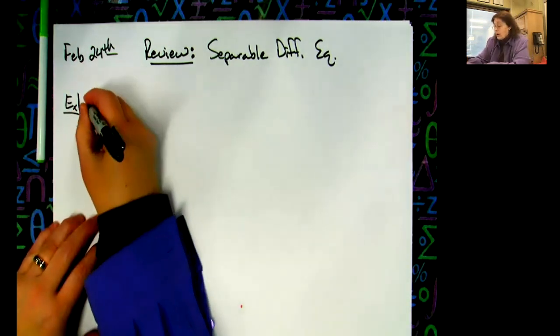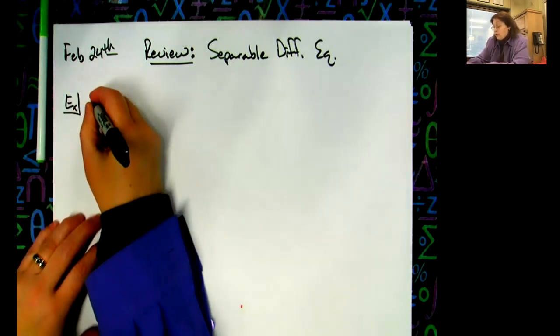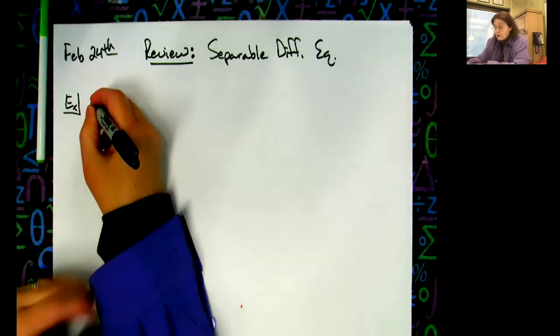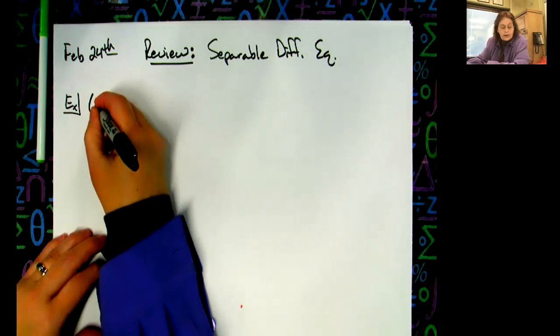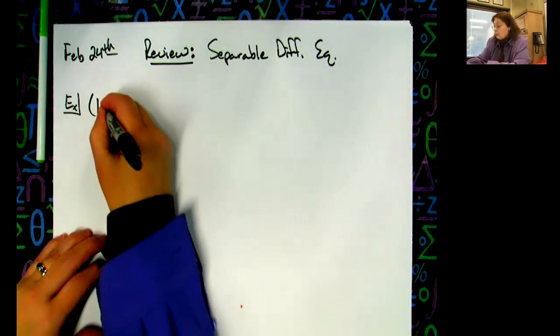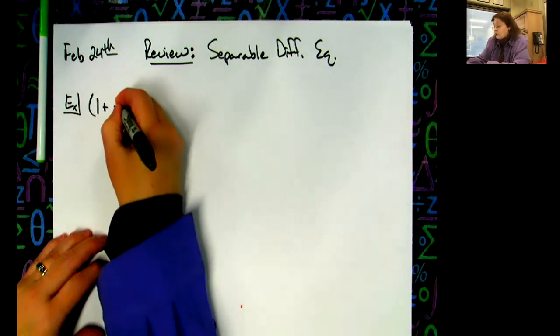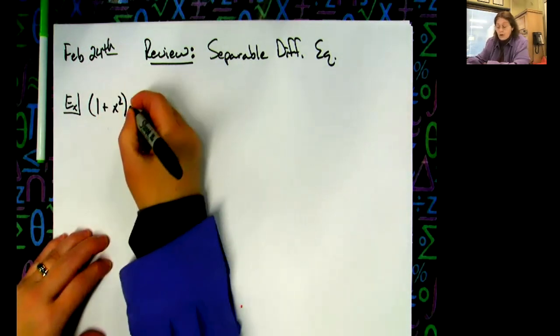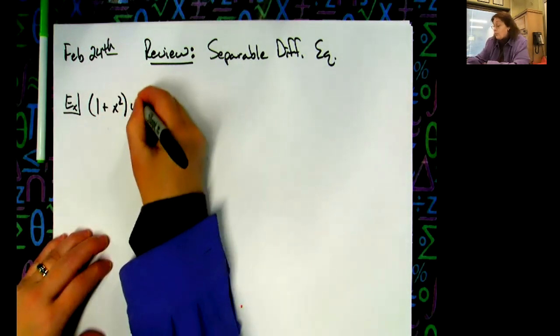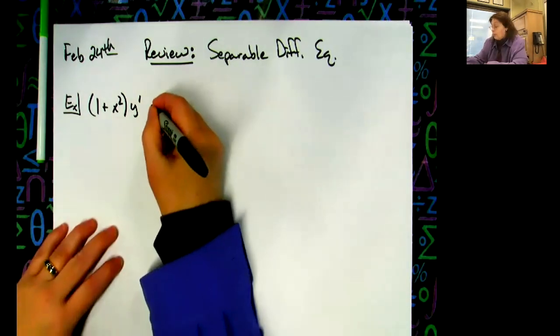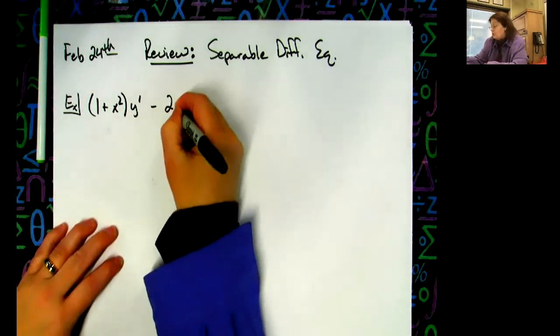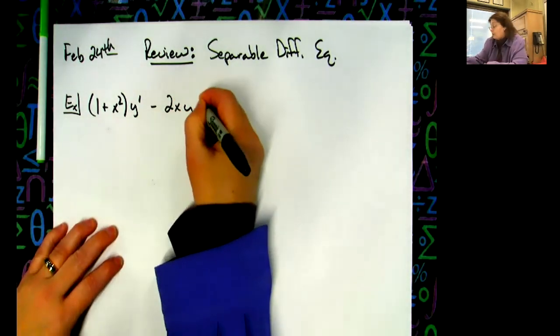What if we had a one plus x squared times y prime, minus two x times y, equals zero?